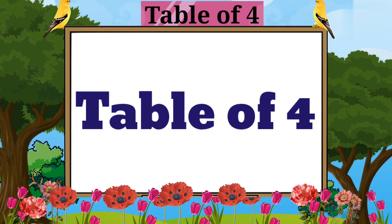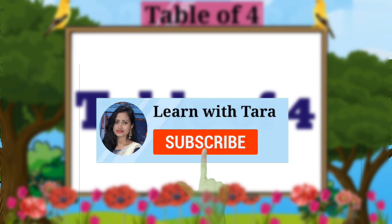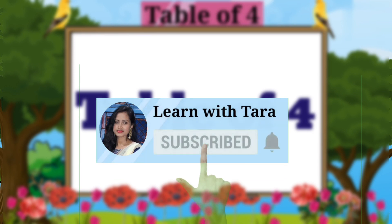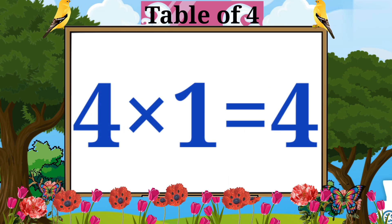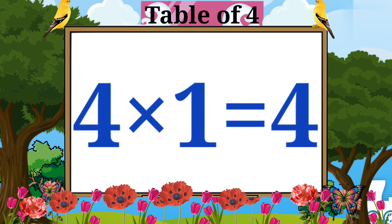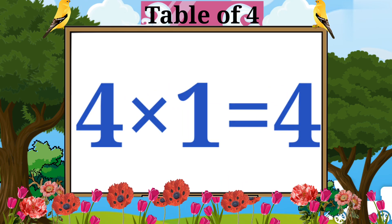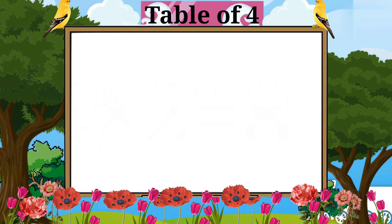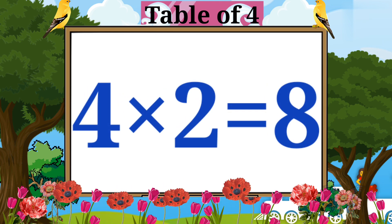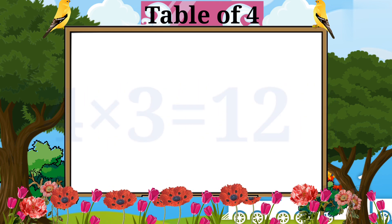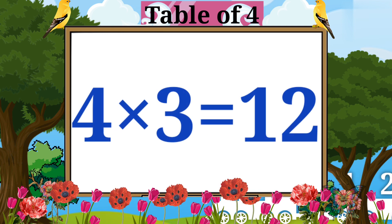Table of four. Four ones are four. Four twos are eight.